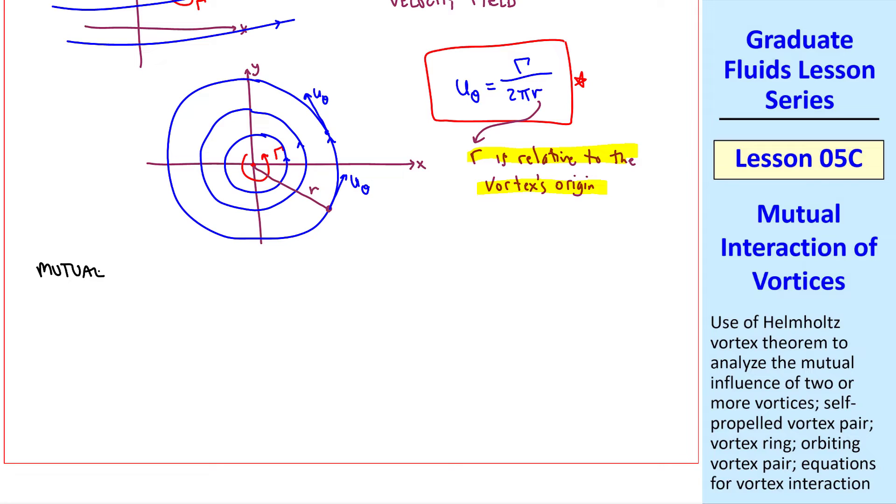With this in mind, let's look at the mutual influence of two or more vortices in the flow. So qualitatively, if vortex 1 is there and vortex 2 is there, Helmholtz tells us that this vortex will move at a speed that's equal to gamma_1 over 2 pi r_1. Meanwhile, vortex 1 will move at speed v_1, which is gamma_2 over 2 pi r_1. We call this mutual interaction of vortices.